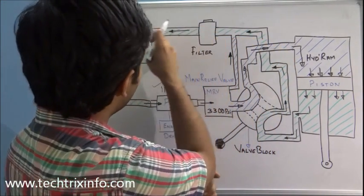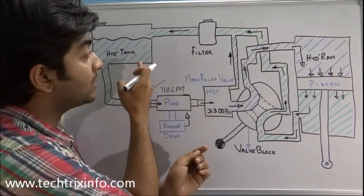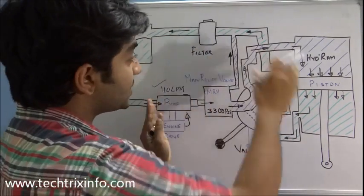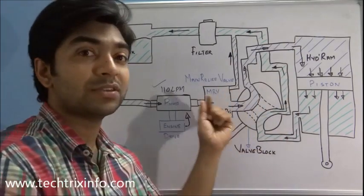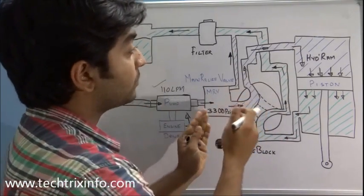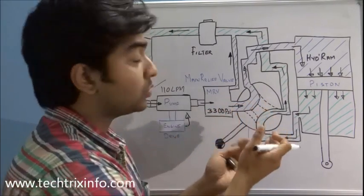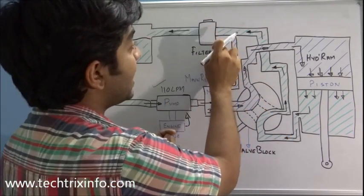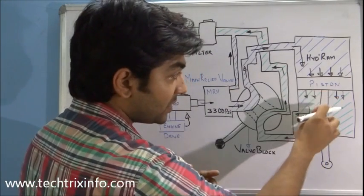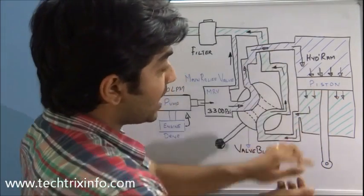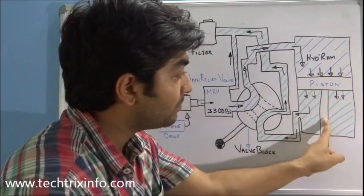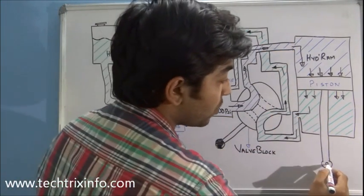The oil travels through the return line, reaches the filter, gets filtered, and comes back to the hydraulic tank. We use a filter because while oil travels continuously through the circuit, impurities can contaminate it. So the filter is placed at this return point. When the oil reaches the return line, the piston comes down, and the piston rod at its end is connected to a component.